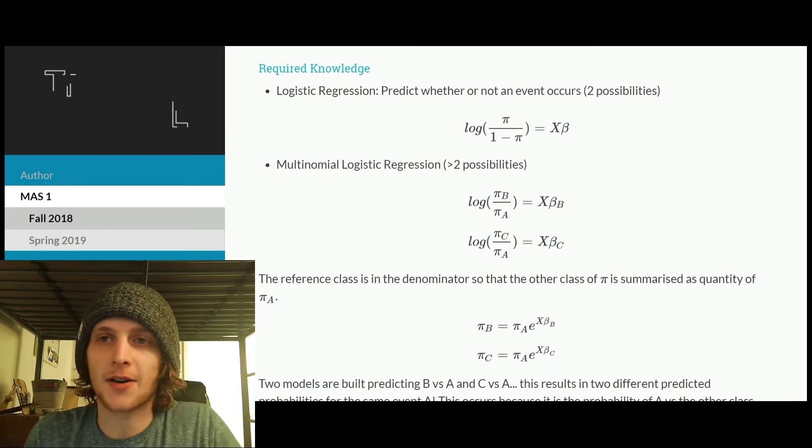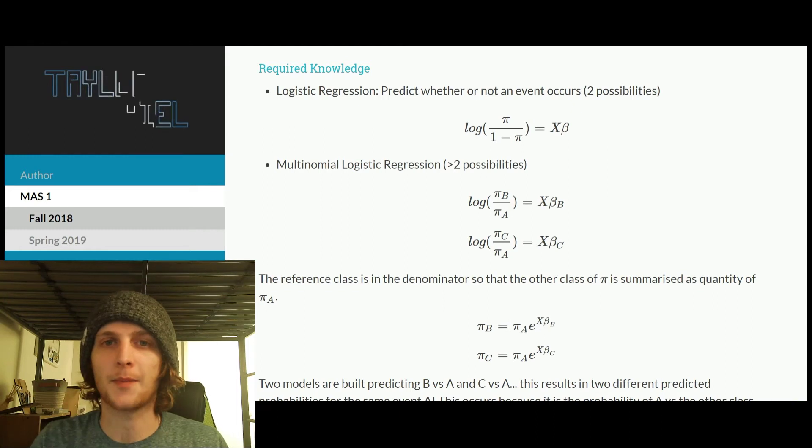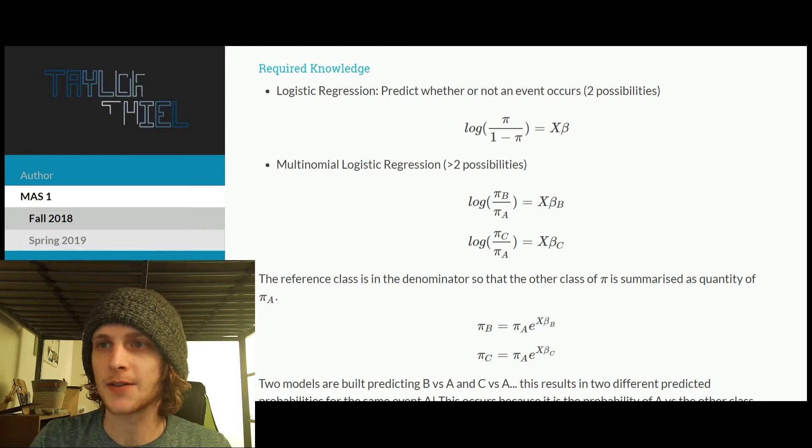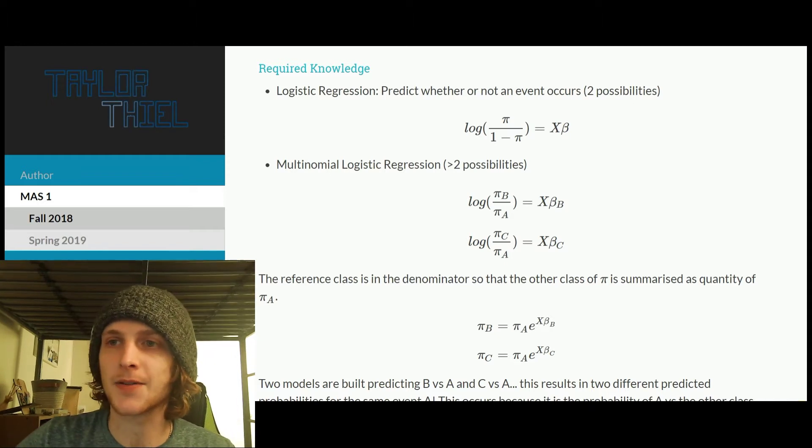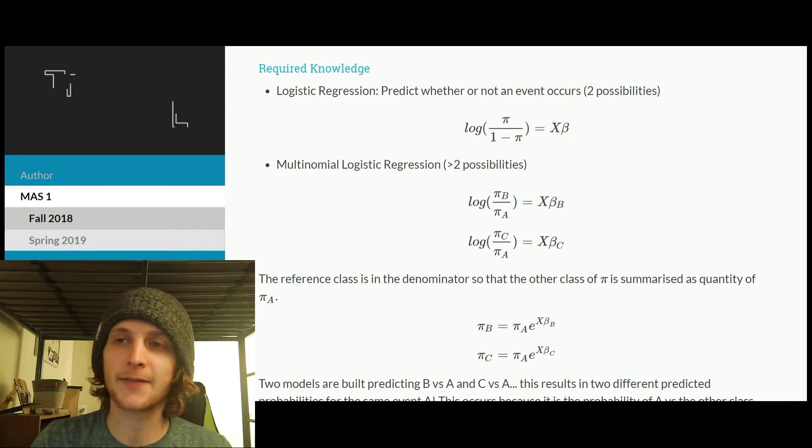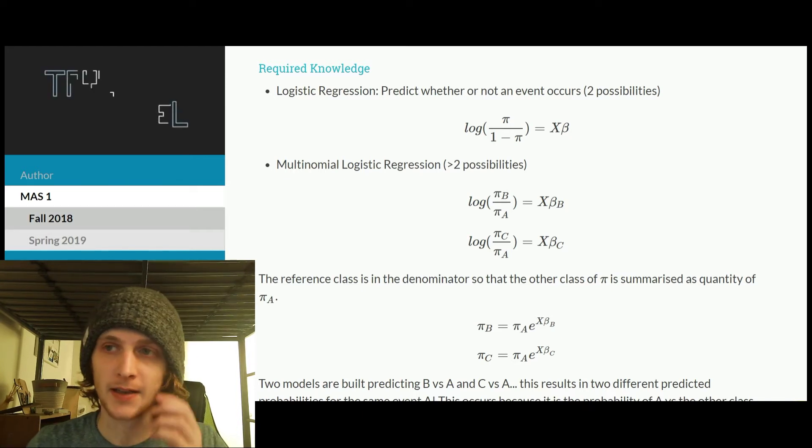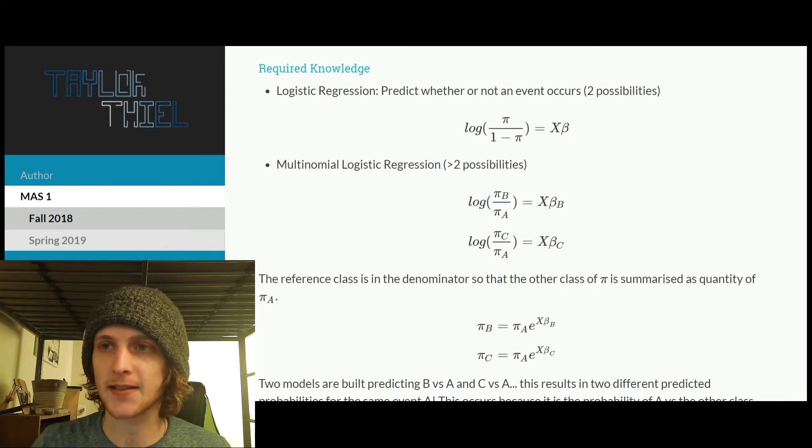First off, we need to start with the actual logistic regression, and this is just when we have a binary target variable. So an event either occurs or doesn't occur, and we use the log odds, or the logits. So the log of the probability divided by 1 minus the probability is what you're setting your linear predictor equal to in this case.